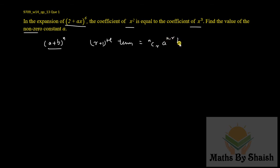So if you compare here, the (r+1)th term is going to be 6Cr × 2^(6-r) × (ax)^r, which can be simplified as 6Cr × 2^(6-r) × a^r × x^r.